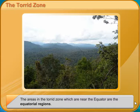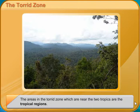The areas in the Torrid Zone which are near the equator are the equatorial regions. The areas in the Torrid Zone which are near the two tropics are the tropical regions.